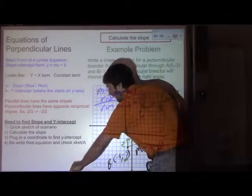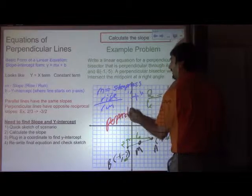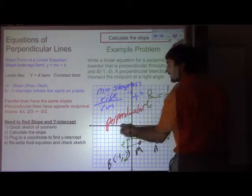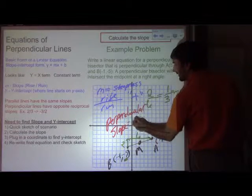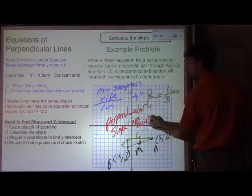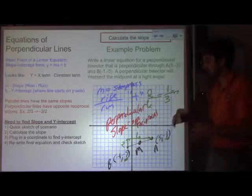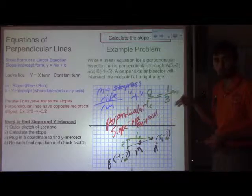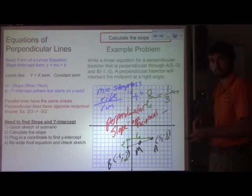But we're looking for the perpendicular. So the perpendicular slope is the opposite reciprocal. Or I always said negative reciprocal, but opposite. So if this is a positive 1/3, the opposite of a positive 1/3 would be negative 1/3.